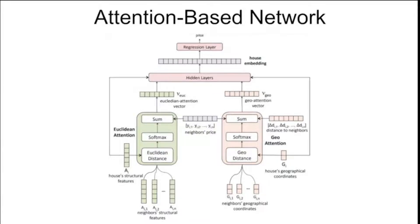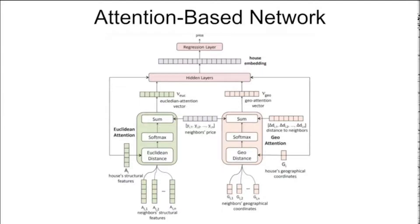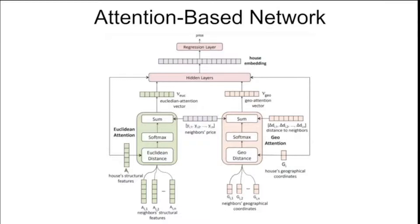Houses with similar features to AI have higher weight in the output, which is the Euclidean attention vector. The geo-attention branch weights the importance of each neighbor based on how geographically close it is to GI — the house's geo-coordinates — so that closer houses have higher weight, producing the geo-attention vector. These vectors are passed to hidden layers, and at the top of the network there is a regression layer to predict the price. The output of the hidden layers is called the house embedding — a vector that embeds the influence of neighbors and house information into a single feature set usable by any regressor.